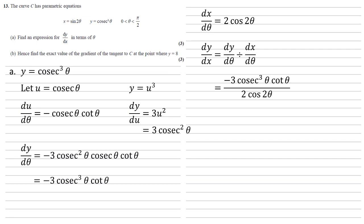Putting what we've got in, that gives us a final answer of minus 3 cosec cubed θ cot θ all over 2 cos 2θ.